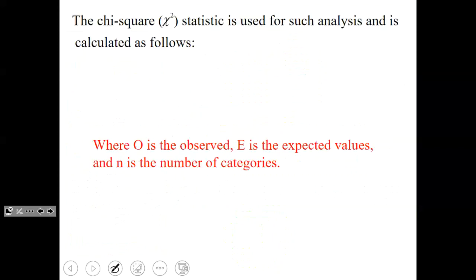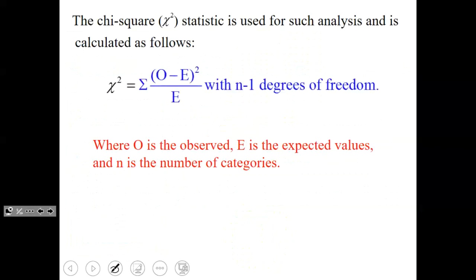The chi-square statistic is used for the analysis. Previous statistics used the x-bar, sample mean, or sample proportions. Now we have the chi-square. We find it by taking the summation of each individual observation minus the expected value for that category, squaring that, and dividing by the expected value. We have n minus one degrees of freedom, but for goodness of fit, n is the number of categories. That observed minus expected is called a residual, just like with scatter plots.